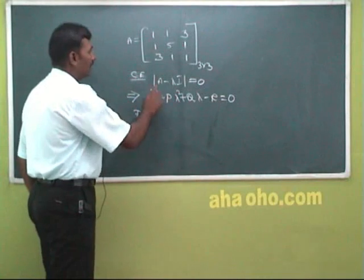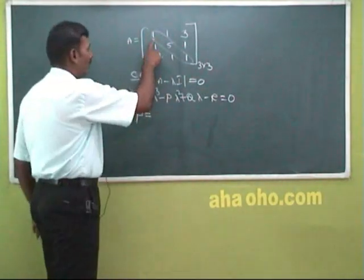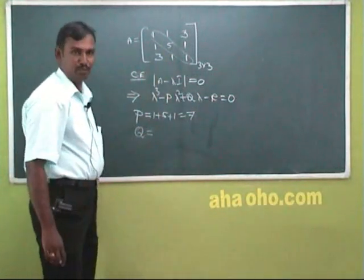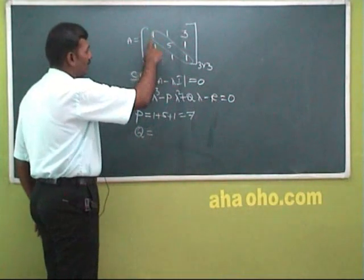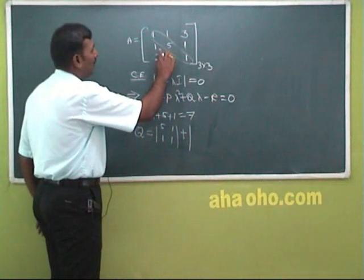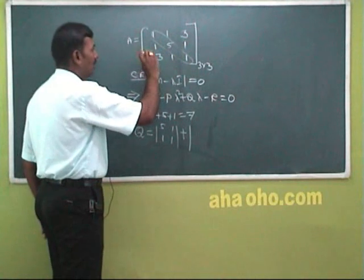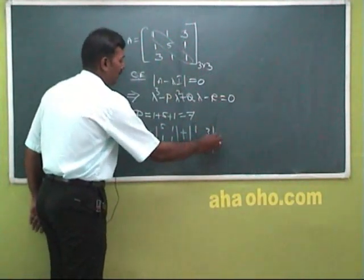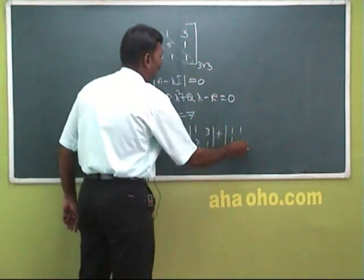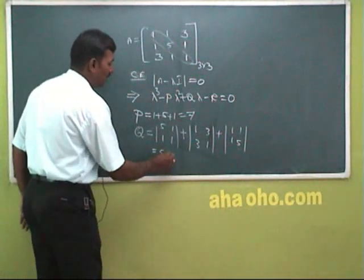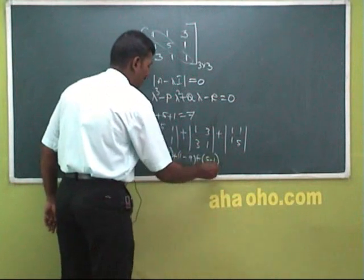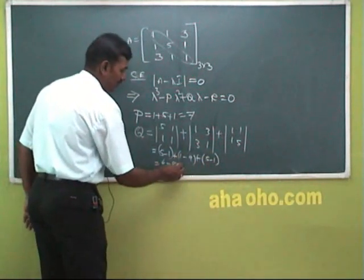We will find the sum of the leading diagonal elements. 1 plus 5 plus 1 is equal to 7, so P equals 7. For Q, we take the sum of the minors of the leading diagonal elements. Omitting each diagonal element in turn: the first minor gives 5 1 / 1 1, plus the second minor 1 1 / 3 1, plus the third minor 1 5 / 3 1. Expanding: (5 minus 1) plus (1 minus 9) plus (5 minus 1) equals 4 minus 8 plus 4 equals 0. So Q equals 0.